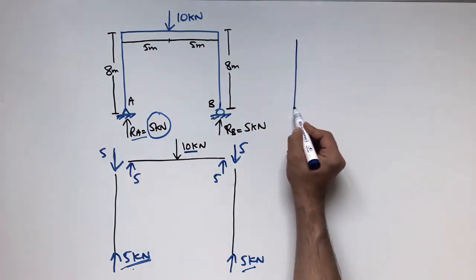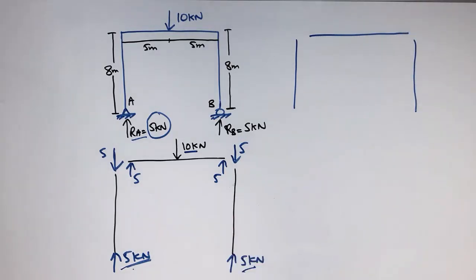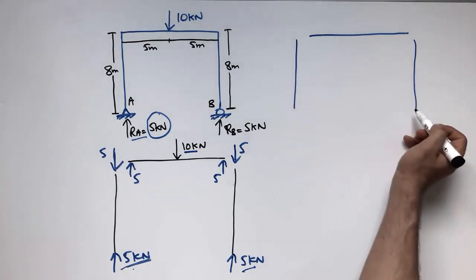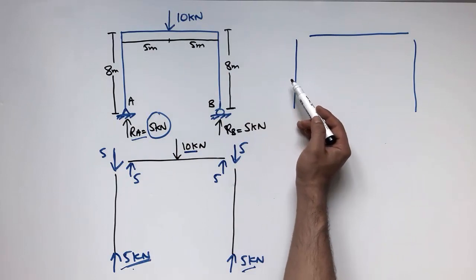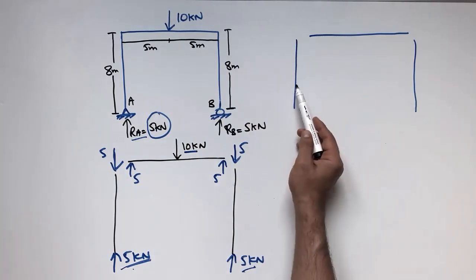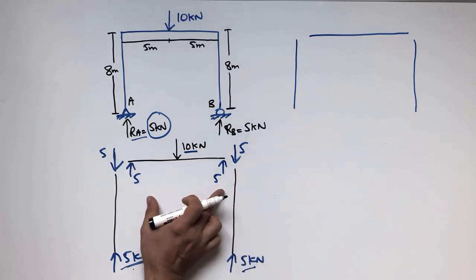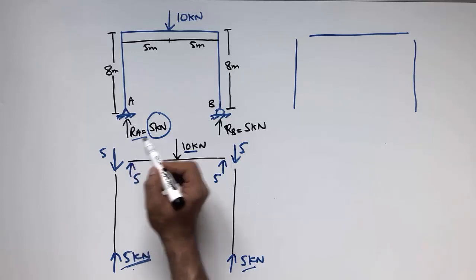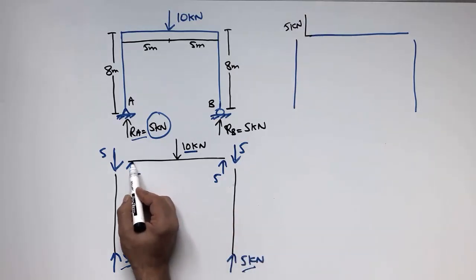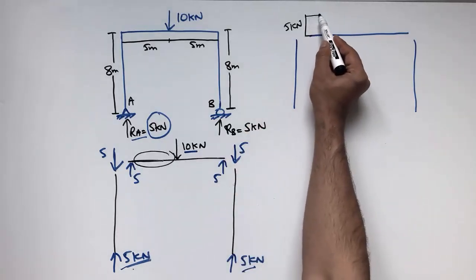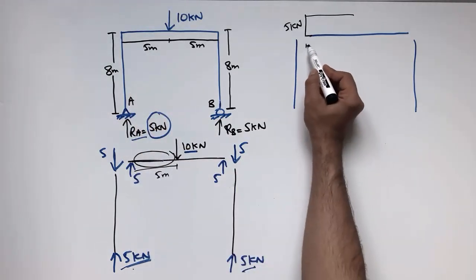Now I will draw the shear force diagram. I draw the reference lines for the frame structure again. Since the force is only acting on the beam, there is no shear force in the columns — no lateral force acts on them. The 5kN load acts upward at the left end, so we move upward by 5kN, then draw a horizontal line for 5 meters where no load acts.